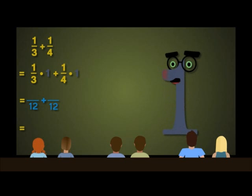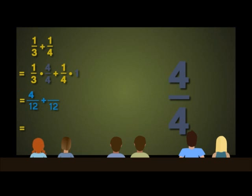We've already determined that we need twelfths. To make one-third into a twelfth, we need to multiply it by one. Noid, can you help us? Sure thing! Yay! So then, one-third times four-fourths is? Four-twelfths. Right!